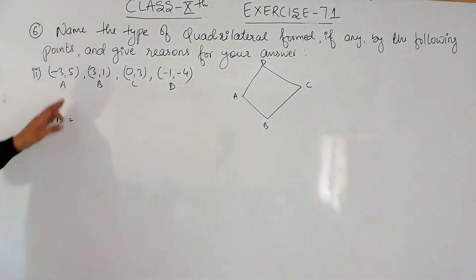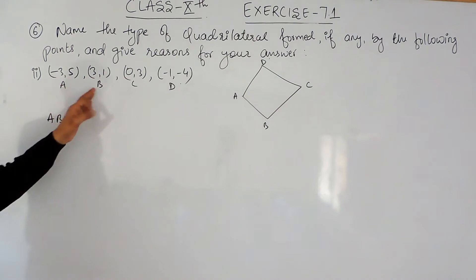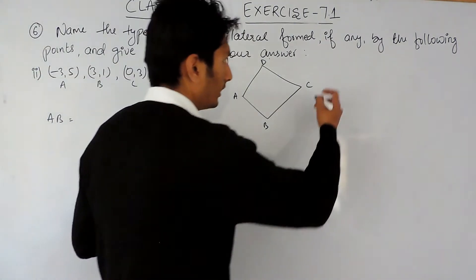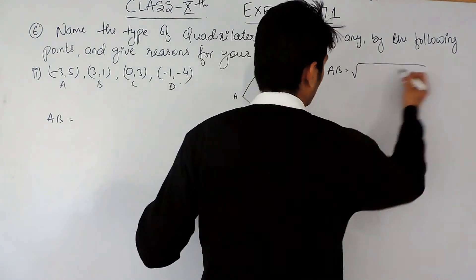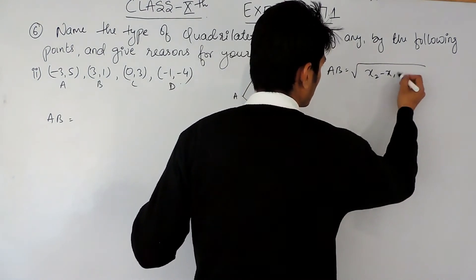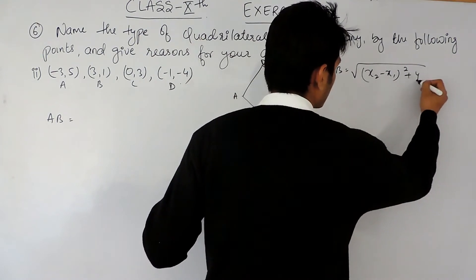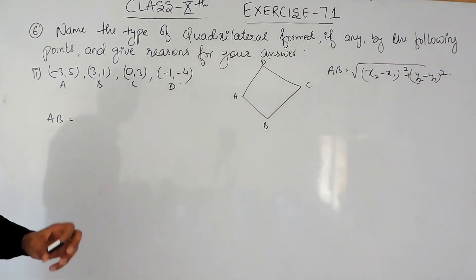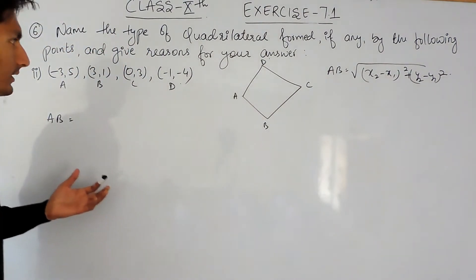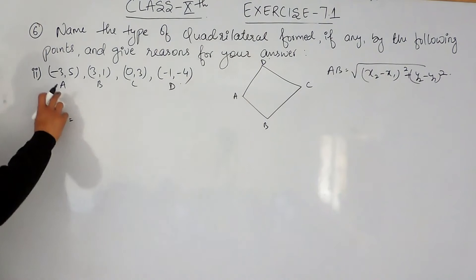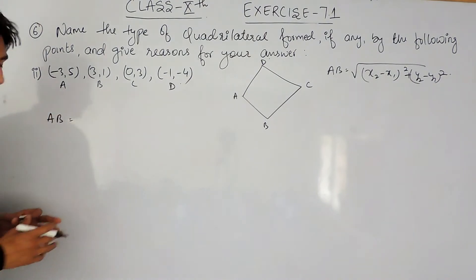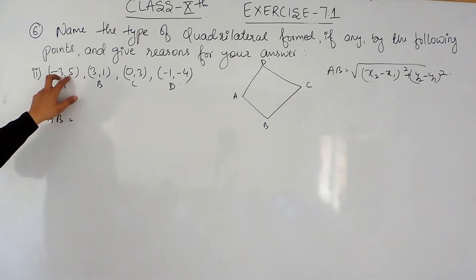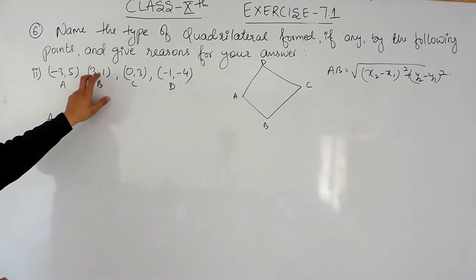Let's find the length of the first line, which is AB. I have to find the distance between these two points. The formula will remain the same, which is: distance = √[(x2 − x1)² + (y2 − y1)²]. This is the formula we use in coordinate geometry. For AB, consider these two points as (x1, y1) and these two points as (x2, y2).